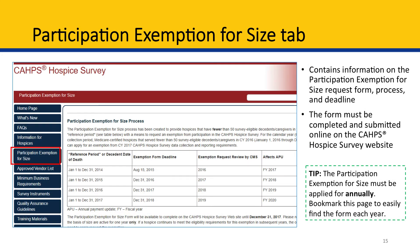Next, we have the Participation Exemption for Size tab. This page contains information on the size exemption eligibility criteria, application process, and deadlines. It also includes the size exemption form that you must submit to be considered for a size exemption. The Participation Exemption for Size form can only be completed and submitted online on this website. If you are eligible, you must submit this form every year, so you may wish to bookmark this tab to return to it annually to complete your size exemption form.